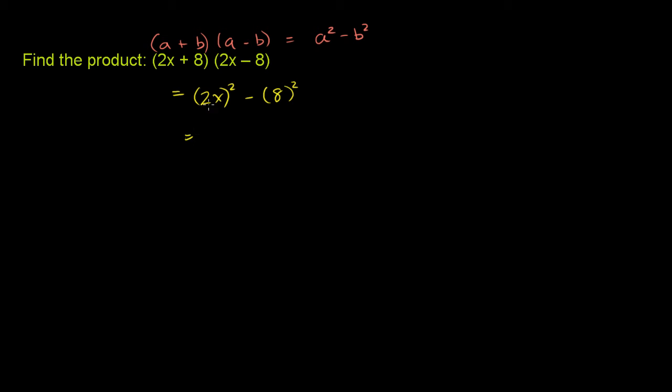So what does this get us? This gets us 2 squared is 4 times x squared minus 8 squared minus 64. And we're done.